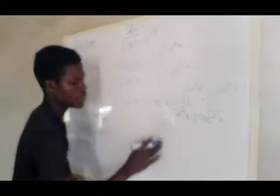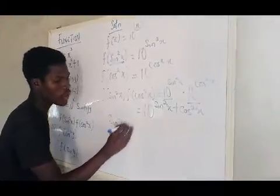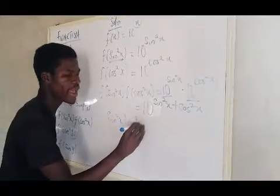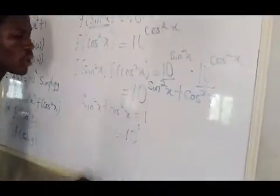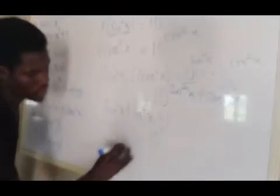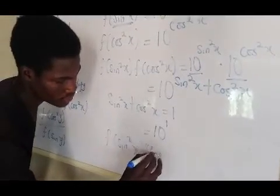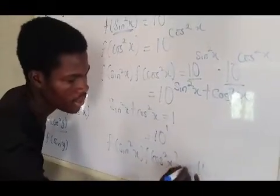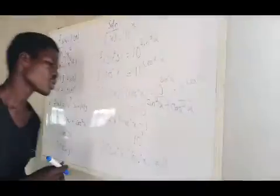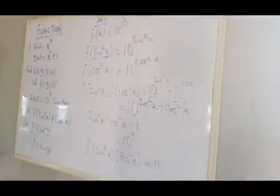You have to recall that in trigonometry, sin²x plus cos²x is 1. So that means we have 10 raised to power 1, and f(sin²x) times f(cos²x) is 10. Because anything raised to power 1 is that thing. So this would be my final answer for f(sin²x) times f(cos²x). So let's see the final solution to that example before wrap up on today's class.